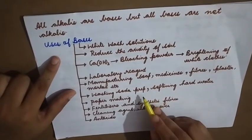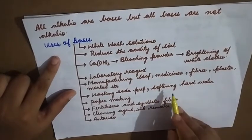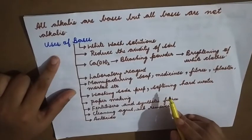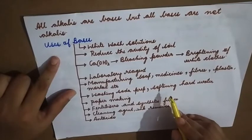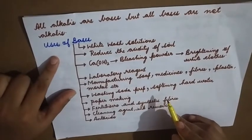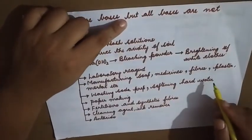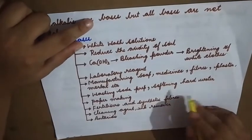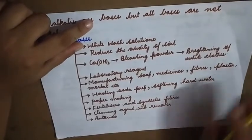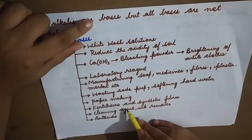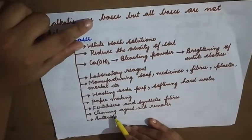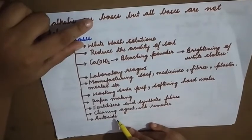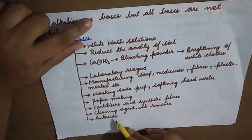Base is used in the preparation of washing soda and softening of hard water. Water contains calcium and magnesium salts which cause hardness — these salts are removed by adding a base, a process known as softening of hard water. Bases are also used in papermaking, manufacture of fertilizers and synthetic fibers, as cleaning agents, ink removers, and antacids. When there is too much acidity in the stomach, an antacid or base is taken.